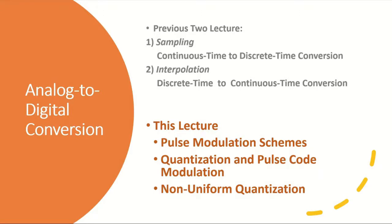We can transform different attributes and characteristics of a pulse strain signal to represent information over that pulse strain. In the first part of this lecture we will study pulse modulation schemes — modifying pulse position, pulse amplitude, and pulse width to represent a particular sample of information signal over a particular pulse. In the second part we will study pulse code modulation, where pulses are encoded in terms of binary sequences to enable communication via transmission of binary bits. Related to pulse code modulation we will study quantization, and particularly non-uniform quantization.